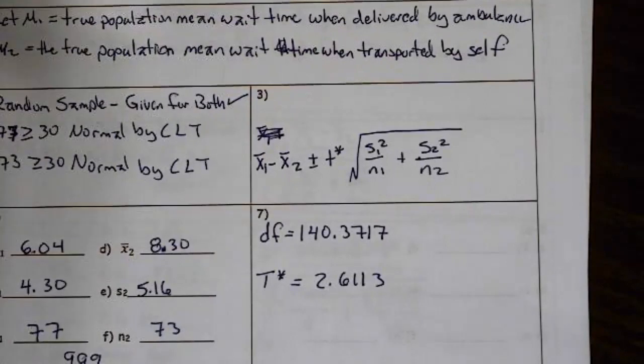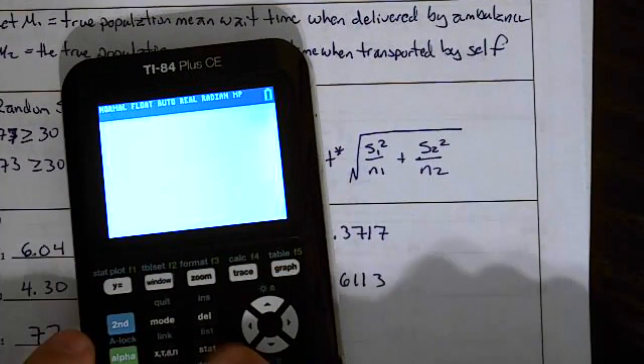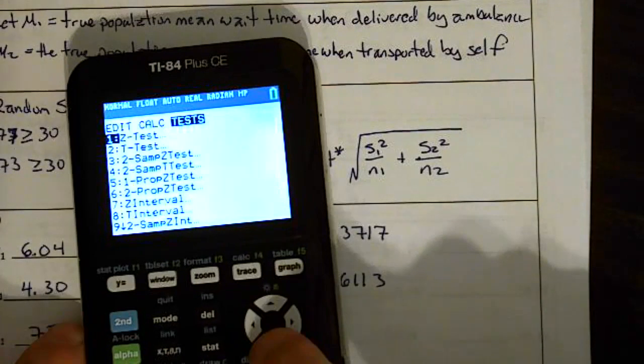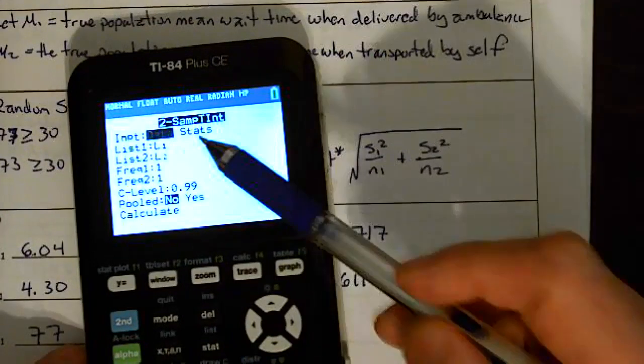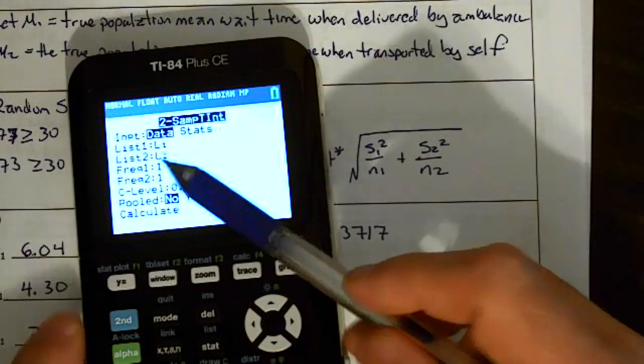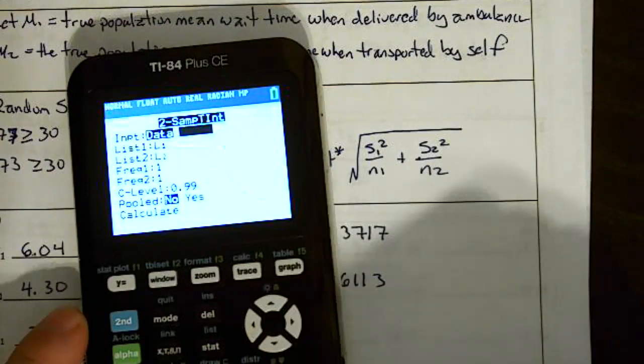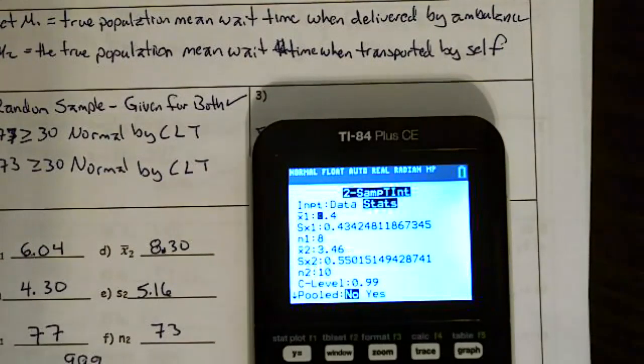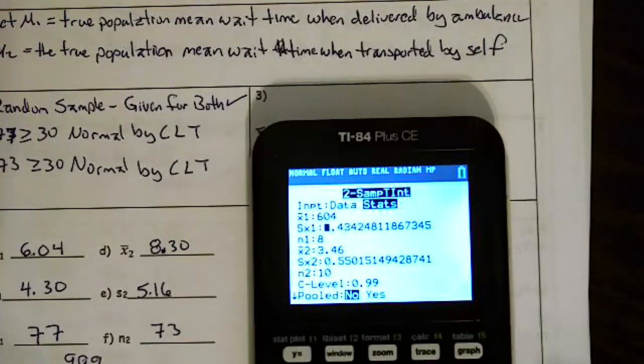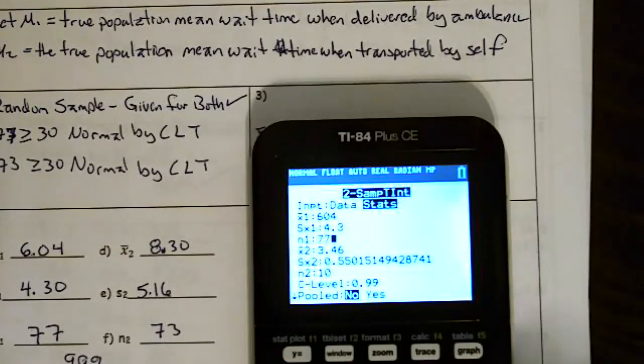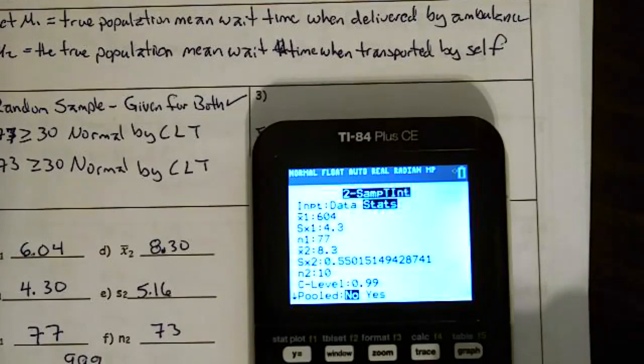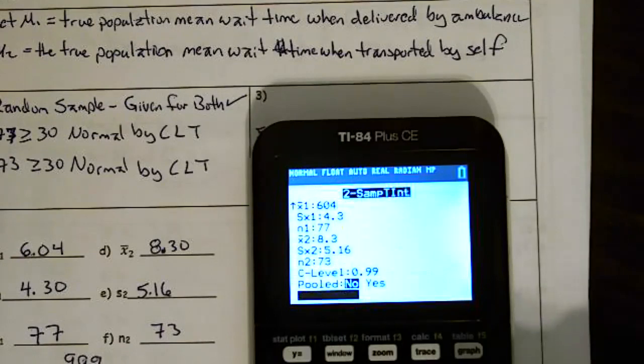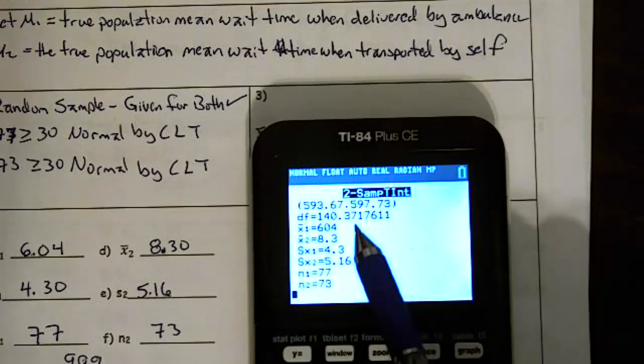So, the big thing here is I have to get my t star, so the way to get my t star is to go ahead and run a test, and I really don't care if you run number 4 or number 0, I'm going to run 0 because that's the one that we're working with. Stats, I need to go ahead and put my information in. X1, 6.04. SX, 4.3. N1, 77. 8.3 for X2. 5.16 for the standard deviation, the sample size is 73. The confidence level of 99, and we never pool, but we calculate.